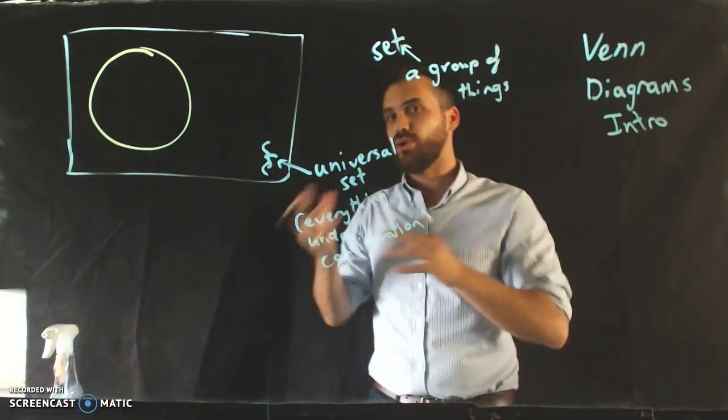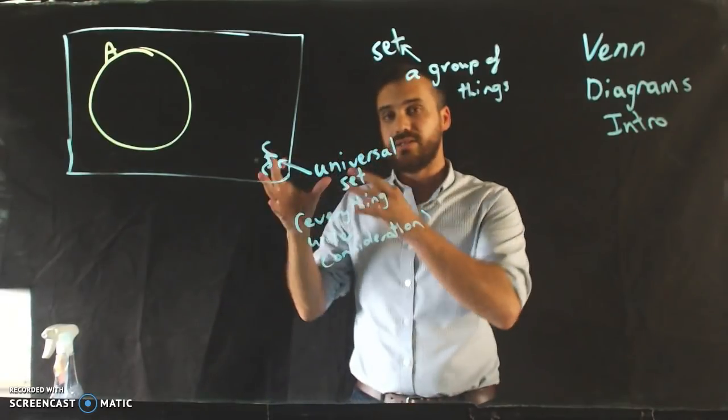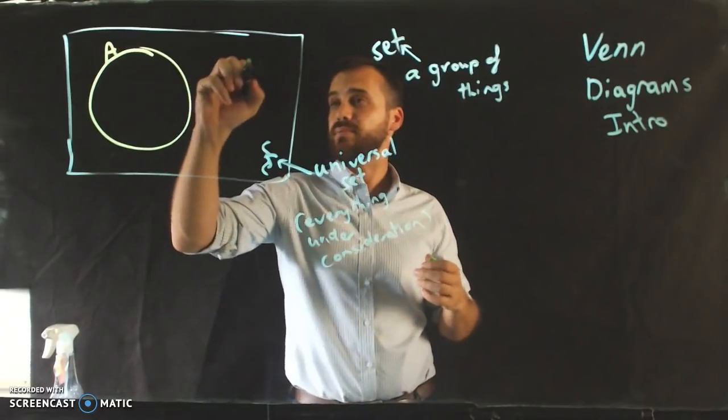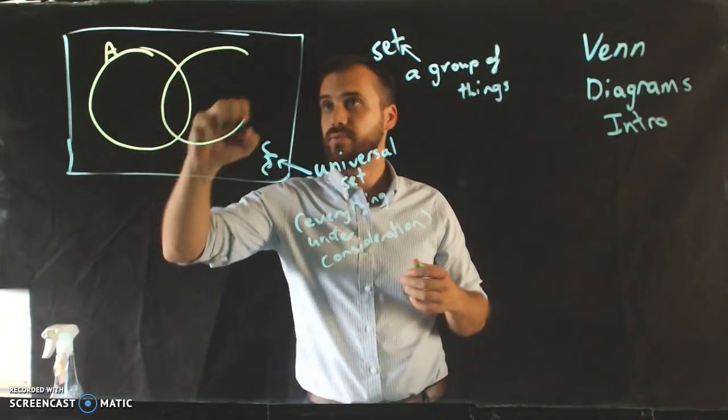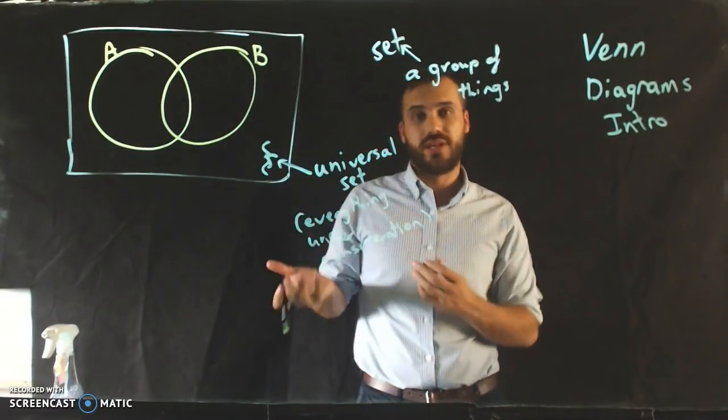We'll call that set A. Now, again, that's a set, a set of things. And then another set, which we'll call set B, another different set of things.